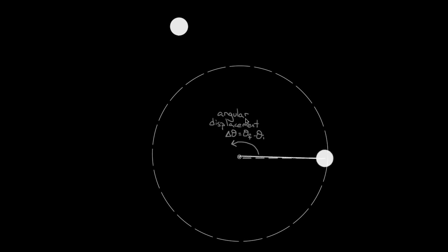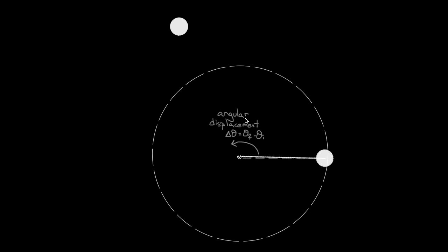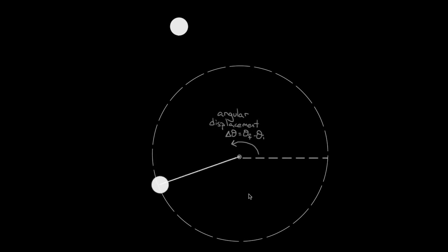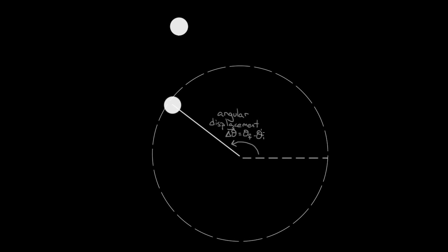And if we started at zero and went through an entire circle, and then another circle all the way, our angular displacement wouldn't be zero — it would technically be two whole revolutions, which would be either 720 degrees or four pi radians. And we don't even have to start at zero; our theta initial could be over here at 180, and we go down to 270, in which case the angular displacement would be 90 degrees or pi over two radians. We typically measure it in radians, as opposed to degrees.